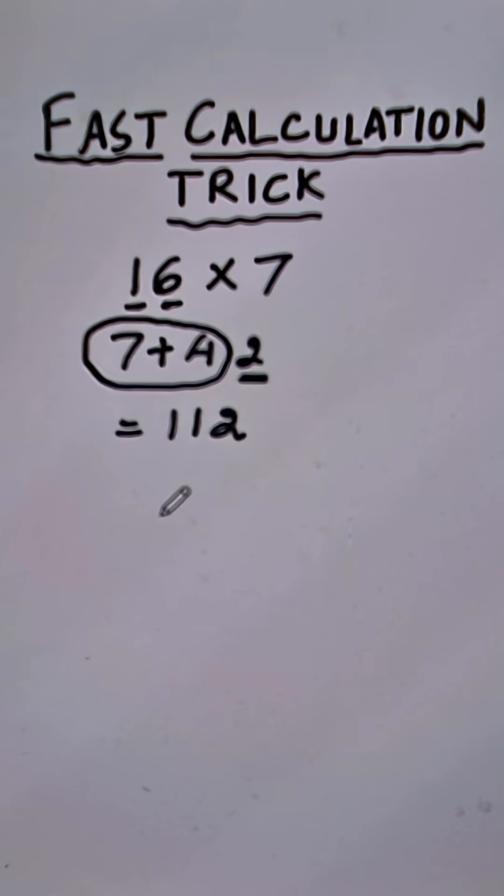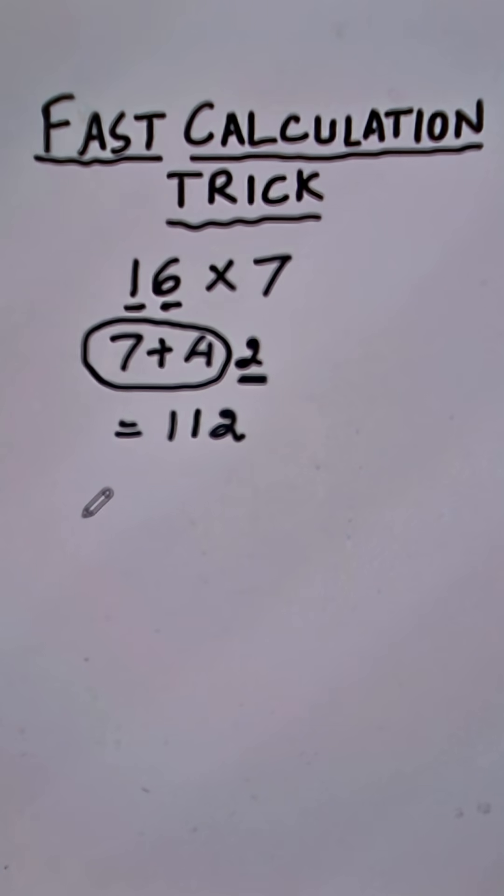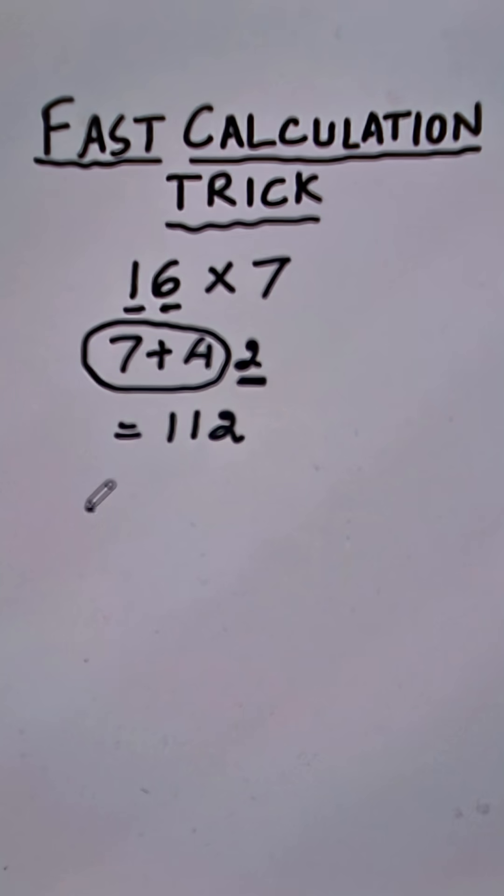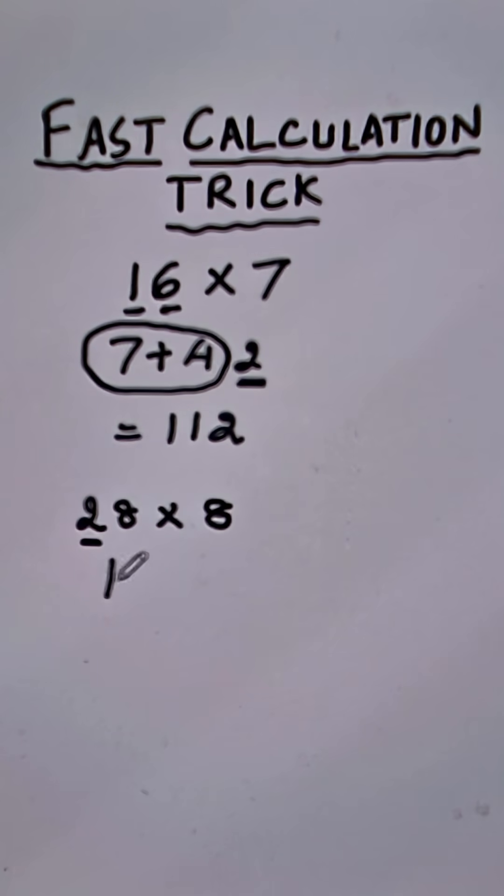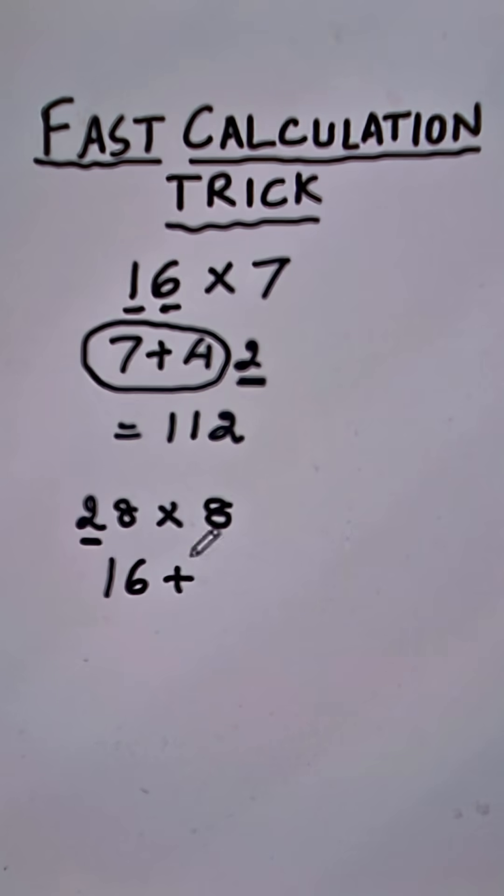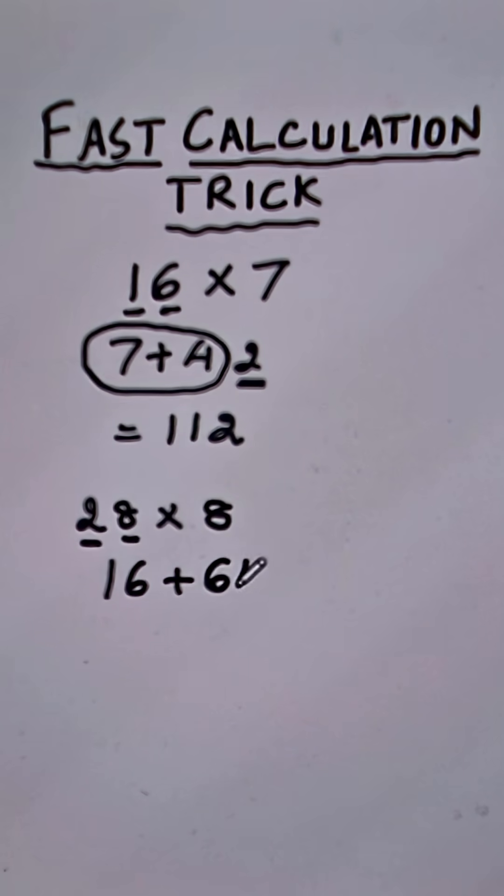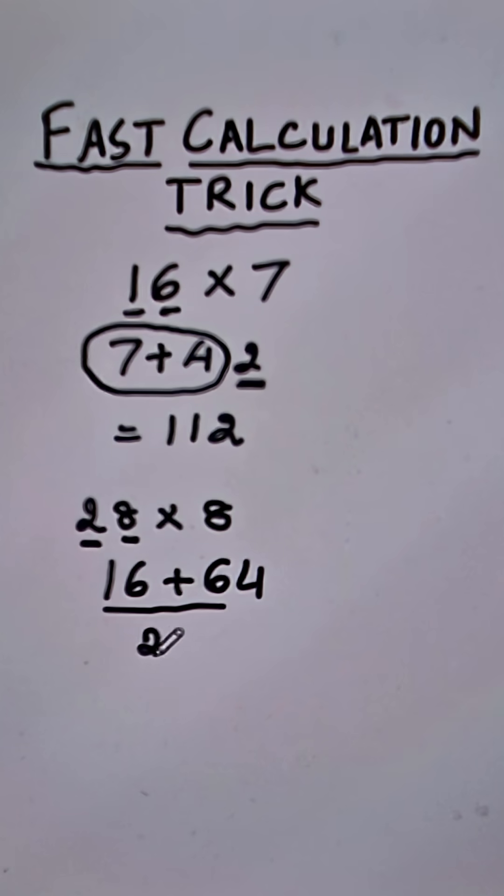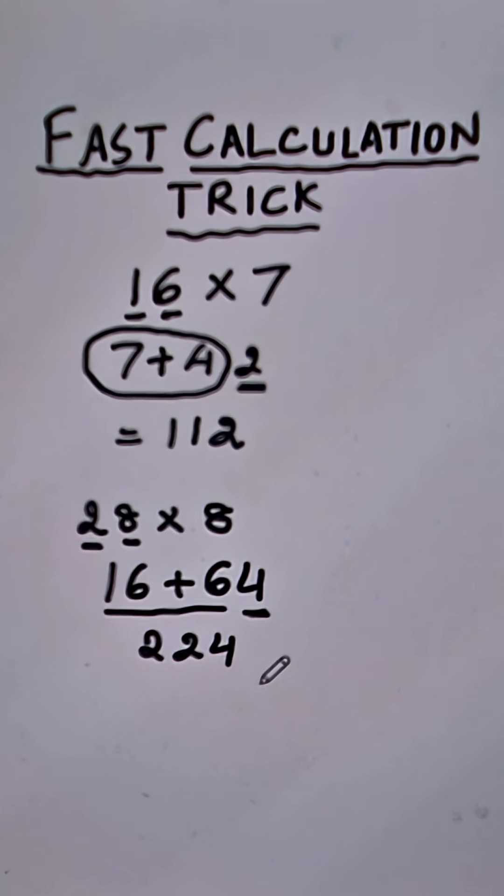Likewise you can do double digit tables up to 99 using this method. Suppose somebody asks you what is 28 times 8. Now you can do 2 times 8 which is 16 then write a plus sign and then 8 times 8 which is 64 and now add 16 and 6 you get 22 and then the 4 retains its place giving you 224 as the answer.